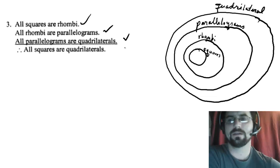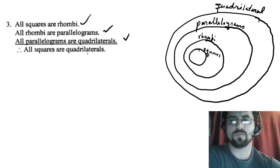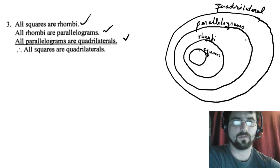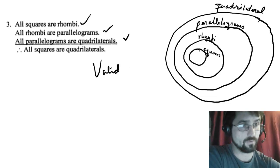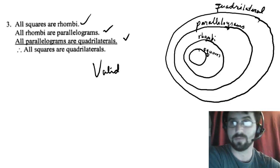So now I'm checking. Are the squares quadrilaterals? And yes, they are. The squares are inside the quadrilaterals. So this is valid, because there's no way to draw the premises without drawing the conclusion. So there's no counterexample.